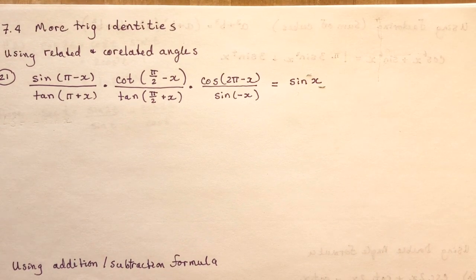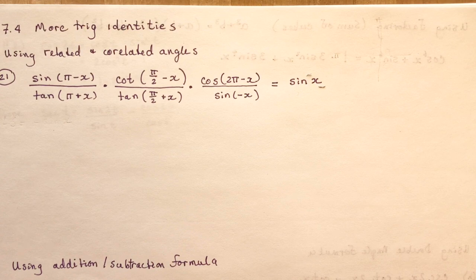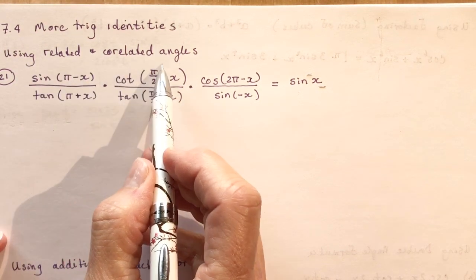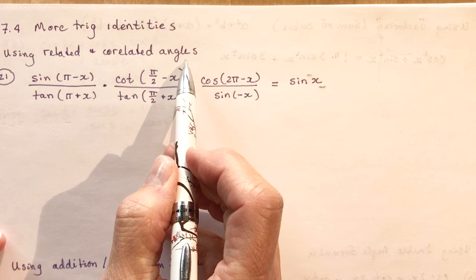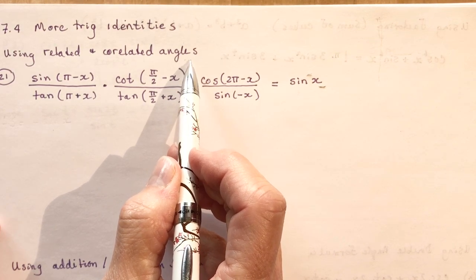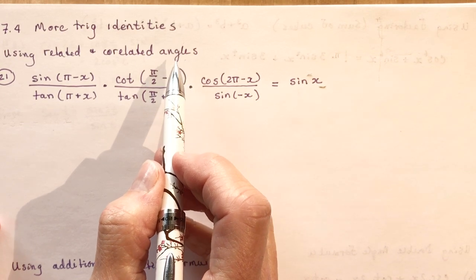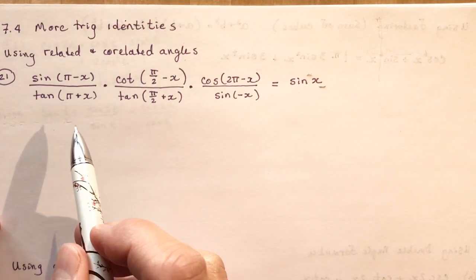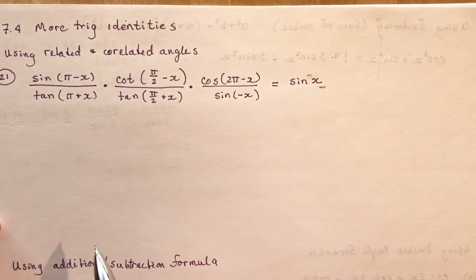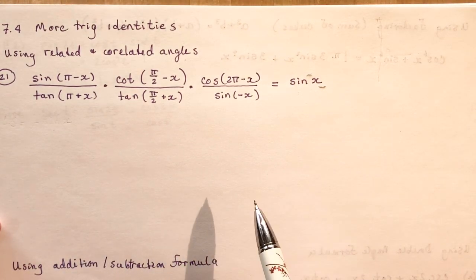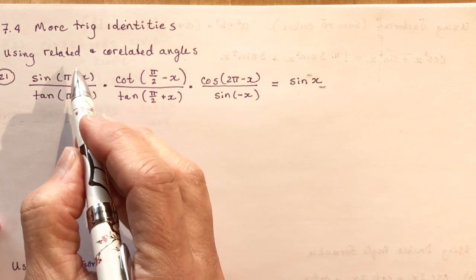As promised, I'm doing some more trig identities for you. These are from section 7.4, some of them from a handout I'm going to give the link to in the description. I've got about five questions here, some from your textbook as well. The handout on the PD wiki site has about 50 different identities, covering things like Pythagorean relationships, double angle, and addition/subtraction formulas. Let's take a look at the first one using related and correlated angles.